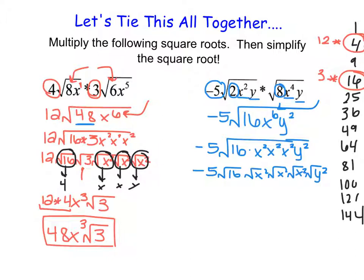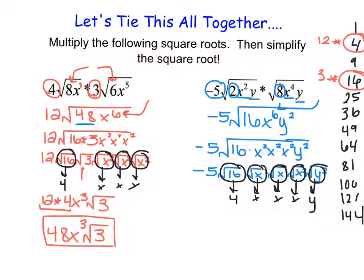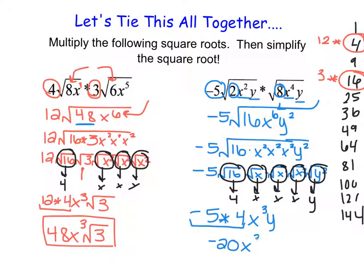Evaluating all the perfect squares: the square root of 16 is 4, each square root of x squared is x, and the square root of y squared is y. Everything under the root has evaluated out of the root. So we have negative 5 times 4 times x cubed times y. Multiplying the numbers outside the root: negative 5 times 4 is negative 20. Our final simplified answer is negative 20x cubed times y.